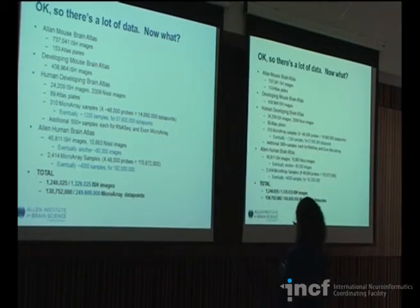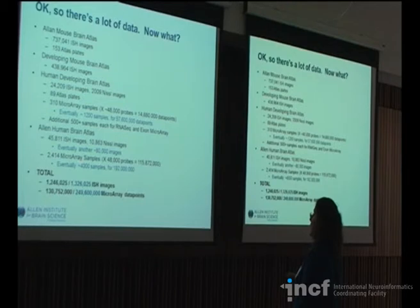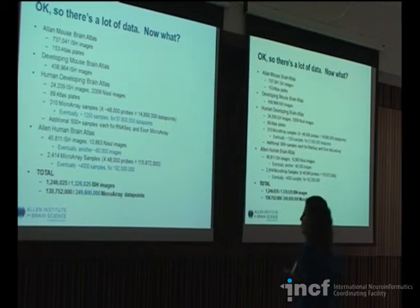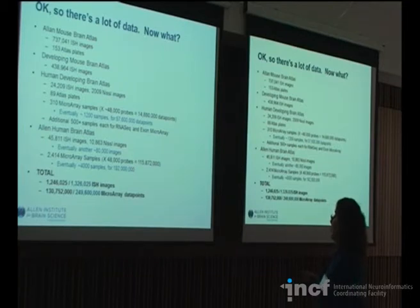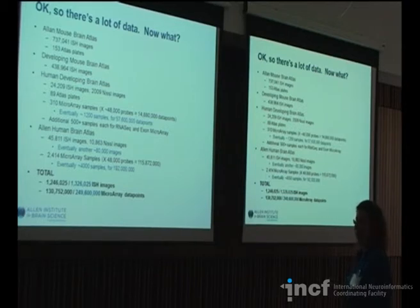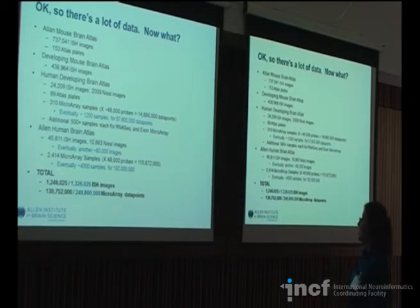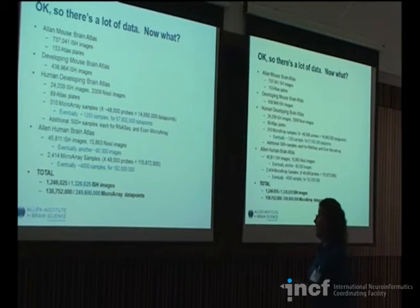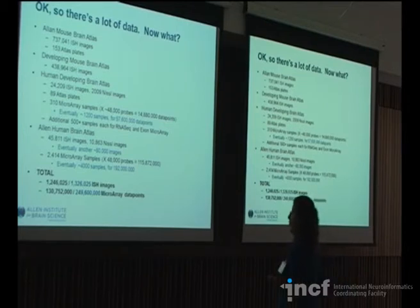There is a lot of data. Those are 64K chips for the microarray, and for the Human Brain Atlas you'll eventually be looking at about 4,000 samples — 192 million data points just for the microarray. We'll end up having almost 100,000 ISH images. Across just these atlases, not counting the transcriptome and exon data from BrainSpan, we'll be looking at almost a quarter of a billion microarray data points.